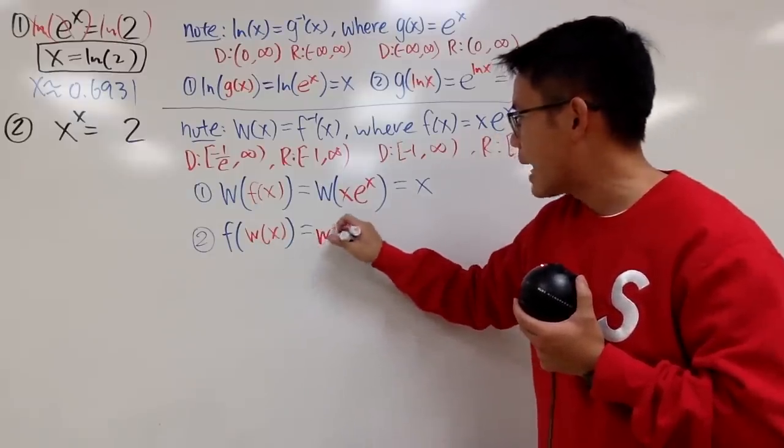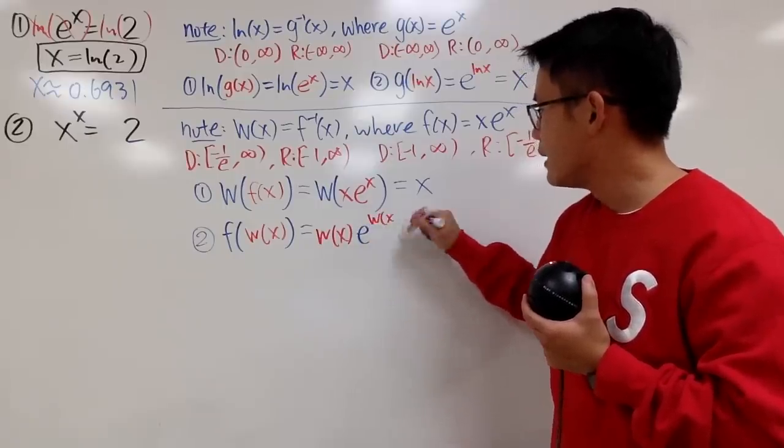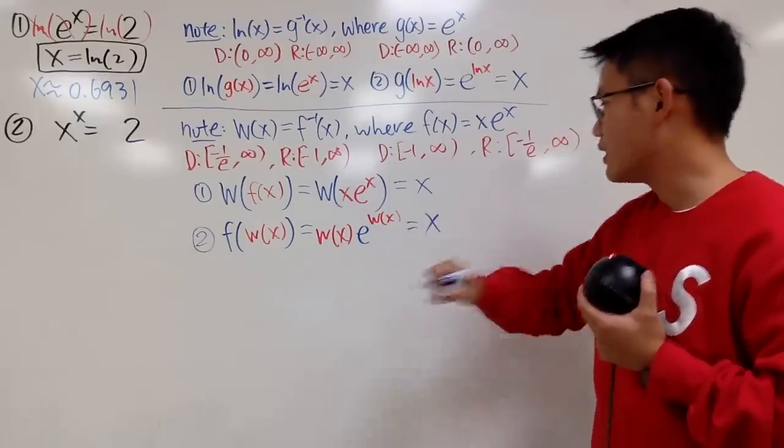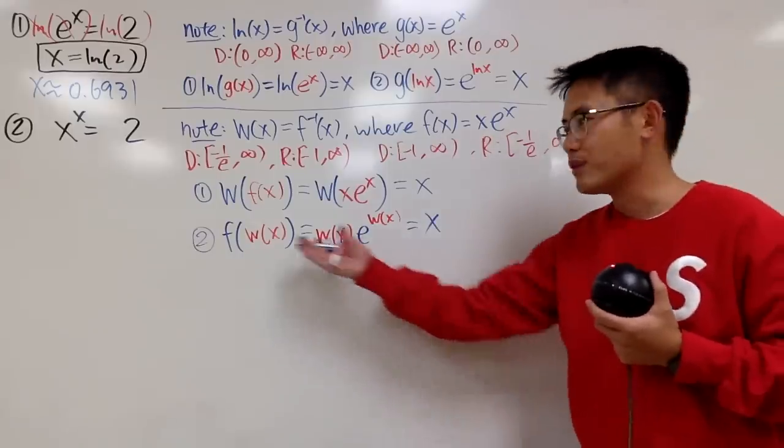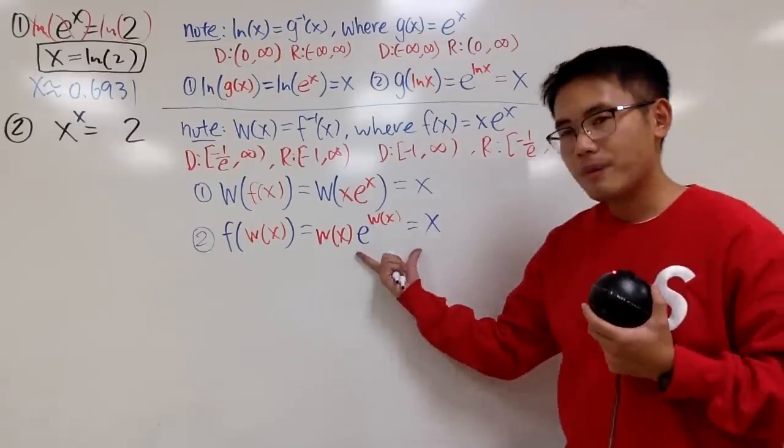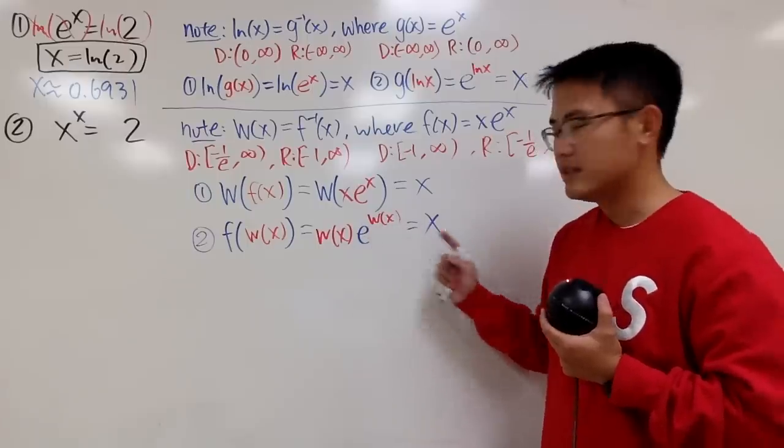So, the expression is w of x times e to the w of x. And you guessed it, this right here will also give you x, if you have good x value, because you have to worry about the domain and things like that. So, pay attention to this expression as well. w of x times e to the w of x is equal to x.